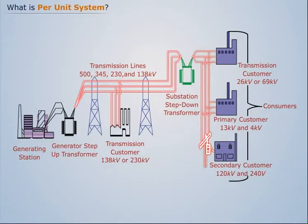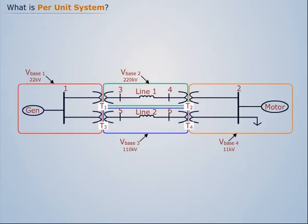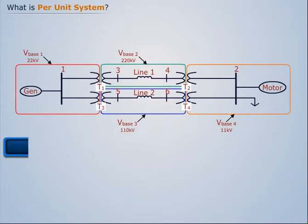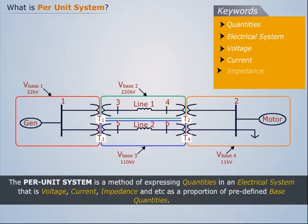These cause problems in finding out the currents and voltages at different points in the network. To alleviate this problem, all the system quantities are converted into a uniform normalized platform, and this method is known as the per unit system.